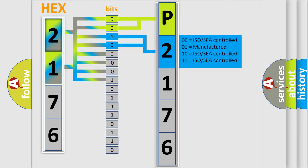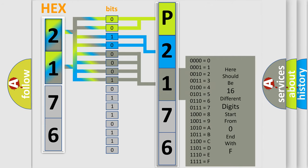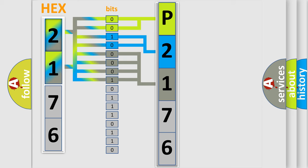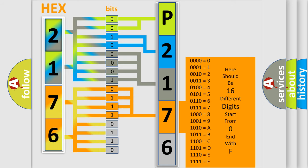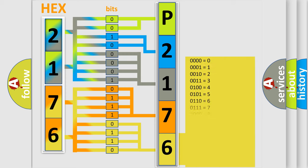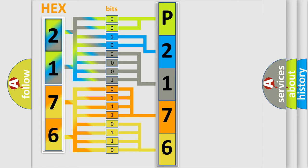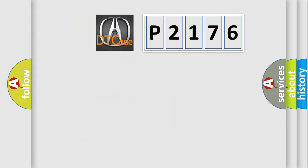The next two bits determine the second character. The last bits of the first byte define the third character of the code. The second byte is composed of a combination of eight bits. The first four bits determine the fourth character of the code, and the combination of the last four bits defines the fifth character. A single byte conceals 256 possible combinations. We now know in what way the diagnostic tool translates the received information into a more comprehensible format.